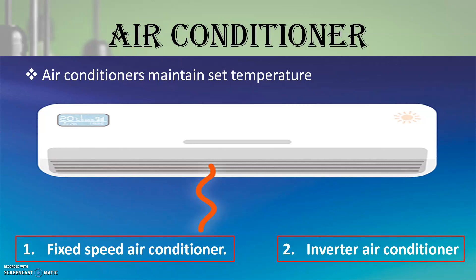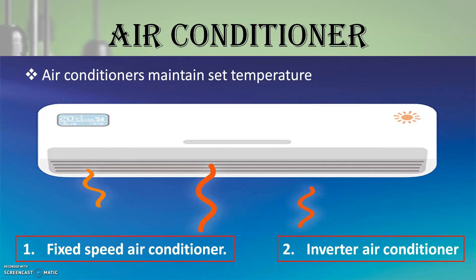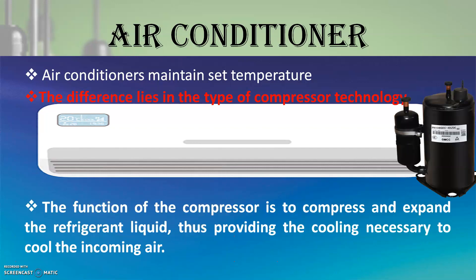Although both the inverter air conditioner and the fixed speed air conditioner have similar functions, the difference lies in the type of compressor technology used for compressing and expanding the refrigerant liquid, thus providing the cooling necessary to cool the incoming air.